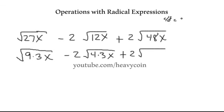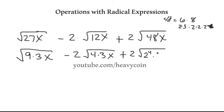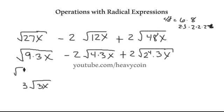48 is equal to 6 times 8. This can be broken down to 2 times 3, and that 8 can be broken down to 2 times 2 times 2 — giving us four 2's and one 3. So I'm going to write 2 to the 4th times 3. We know the square root of 9 is 3, so we can break that up as the square root of 9 times the square root of 3x, giving us 3 times the square root of 3x. The square root of 4 is 2, so that term gives us 4 times the square root of 3x.